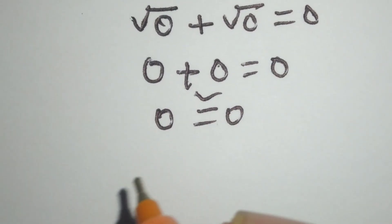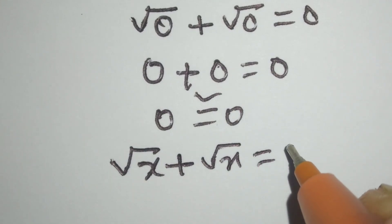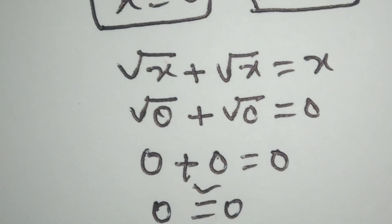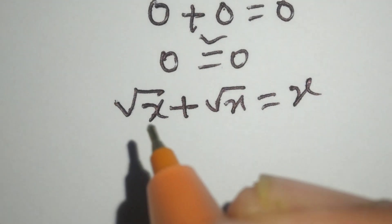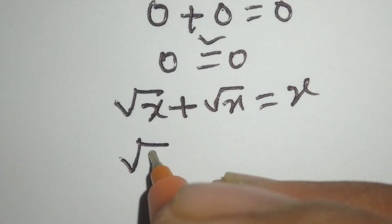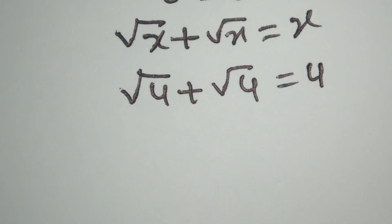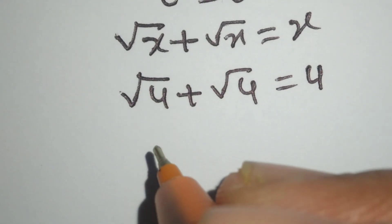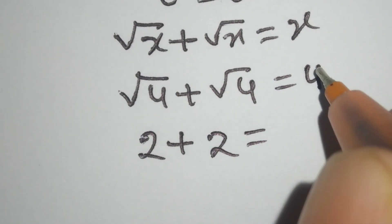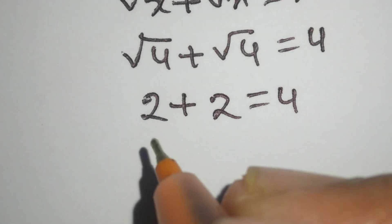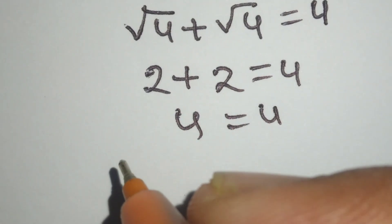Now we will check the other value. Square root of x plus square root of x equals x, putting x equal to 4: square root of 4 plus square root of 4 is equal to 4. Square root of 4 is 2, so 2 plus 2 equals 4, and 4 equals 4. So x equal to 4 is also a valid answer.